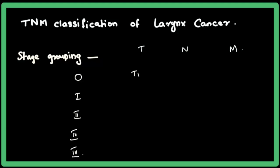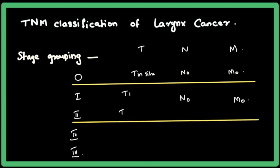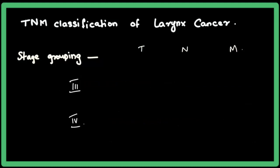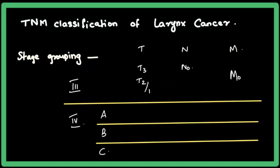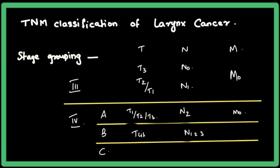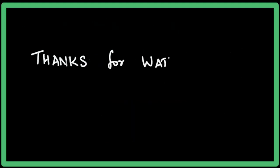Based on TNM, we can stage the tumor: Stage 0 means the tumor is in situ. Stage 1 and Stage 2 correspond to T1 and T2 respectively, with N0. In Stage 3, T is 3 with N0, or N is 1 with lower T values. Stage 4 is divided into 4A, 4B, and 4C. Stage 4A: T4a with N0 or N1, or N2 with T1-T3. Stage 4B: T4b with any N, or N3 with any T. Stage 4C: any T and N with M1 (distant metastasis present). This staging is used for treatment planning.